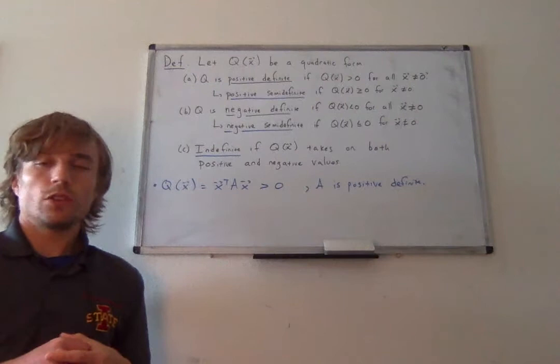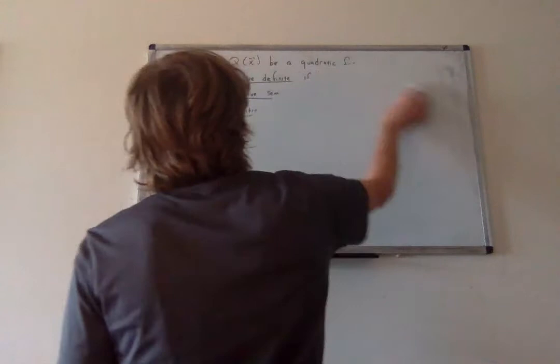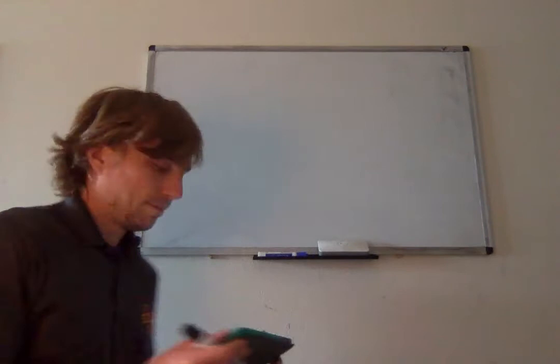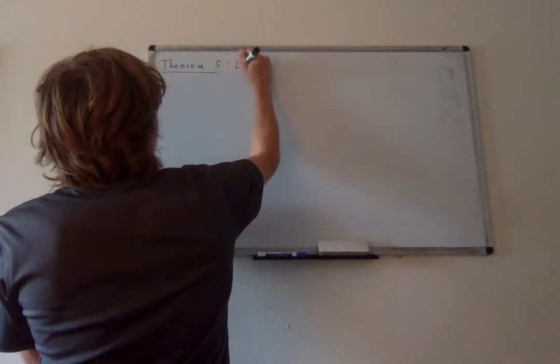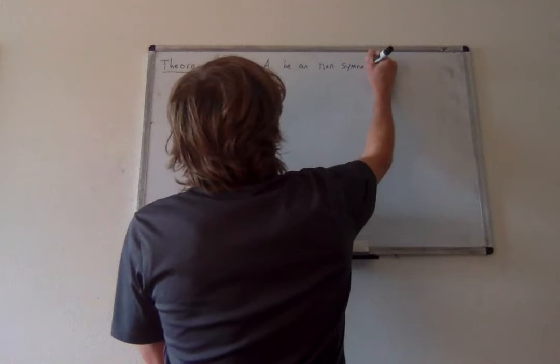So how can we classify a quadratic form if just looking at the equation is hard? It turns out there's a really nice theorem — theorem 5 in chapter 7 — which allows us to classify every quadratic form based on its matrix. It's one of those theorems I really wouldn't have thought of on my own. If we have an n-by-n symmetric matrix A and its corresponding quadratic form, then the classification follows from the eigenvalues of A.